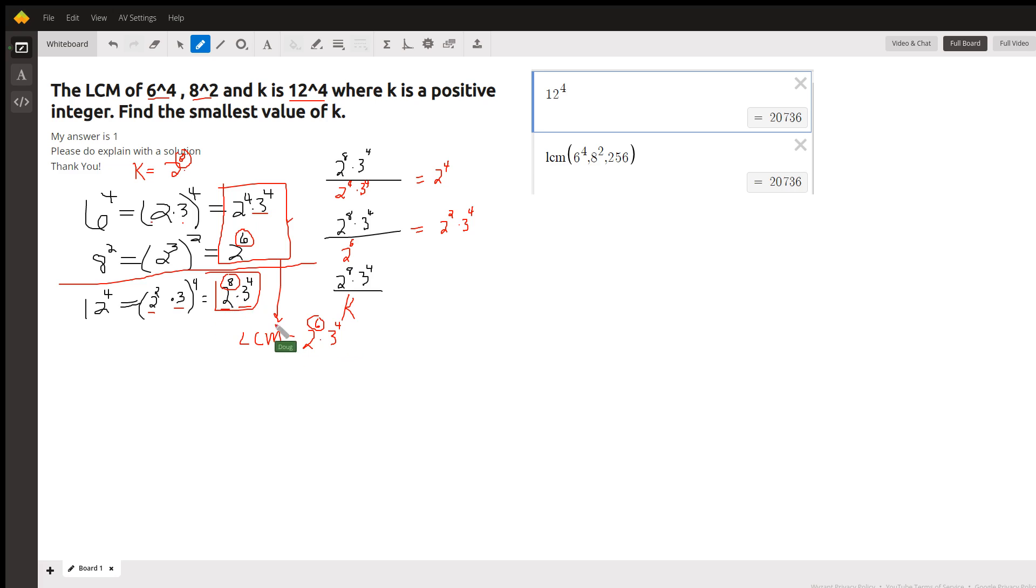So, 2 to the 8th is the smallest integer that gives you an LCM of 2 to the 8th, 3 to the 4th, or 12 to the 4th. And here's kind of proof. 12 to the 4th is 20,736. That's the LCM for these three numbers. You can try other numbers less than 256, but I think you'll see that they do not give you an LCM of 20,736.